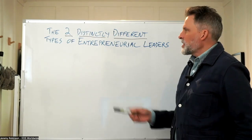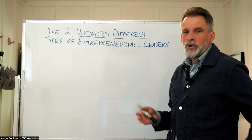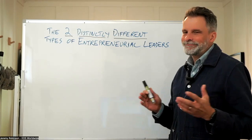I want to talk about the two distinctly different types of entrepreneurial leaders and how when they're working together, when they're in sync, they can drive incredible value for an organization. And when they're not, they just create chaos.